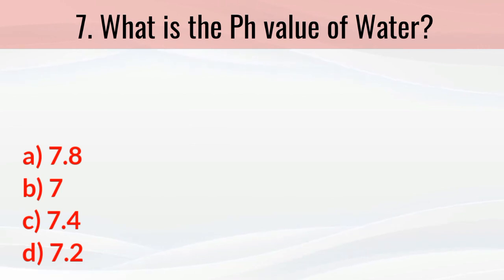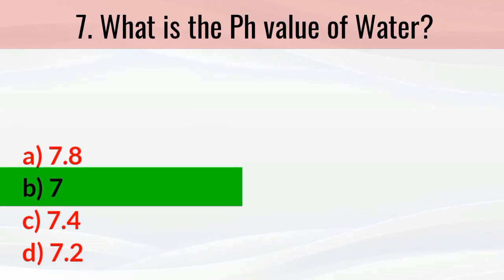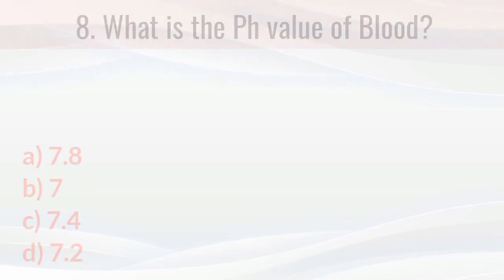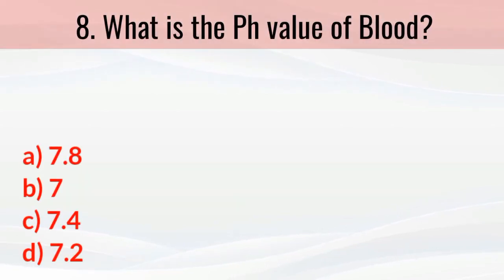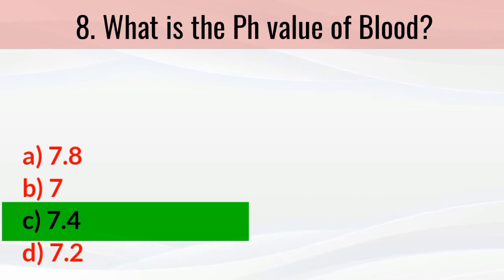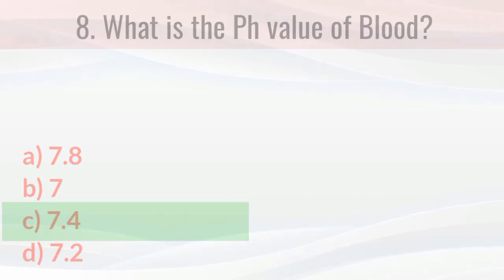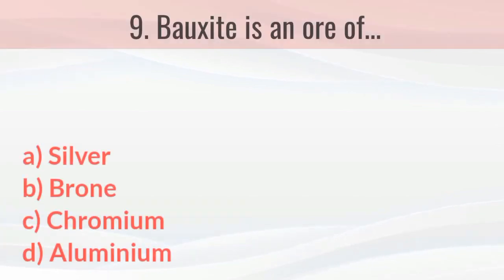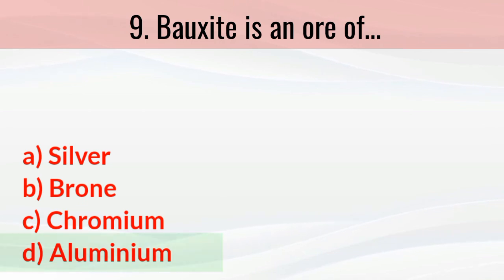What is the pH value of water? The right answer is seven. What is the pH value of blood? The right answer is 7.4.